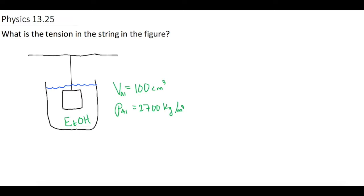What is the tension in the string in the figure? First off, let's draw our forces on the block. The block is being held up by some sort of tension force, and the water is also pushing up on it as well, so we have some sort of a buoyant force on the block. And then, of course, going straight down, we have the weight of the block.